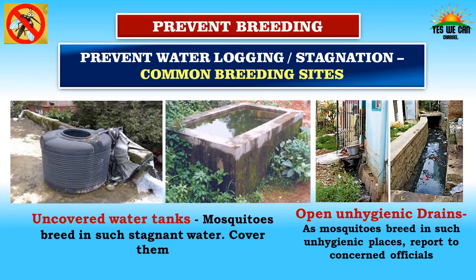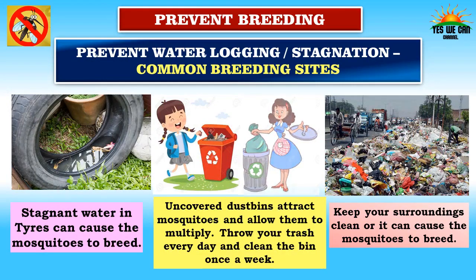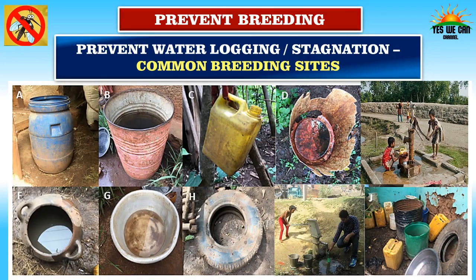Uncovered water tanks are breeding places for mosquitoes — cover them. Open drainage systems increase your risk of malaria; report to concerned officials. Stagnant water and tires are also breeding places. Do you cover your dustbin? Uncovered dustbins attract mosquitoes and allow them to multiply. Throw your trash every day and clean the bin once a week. Keep your surroundings clean. Even a few drops of water in a bucket not used for many days can cause mosquitoes to breed. If you are going anywhere, either cover it or empty the bucket.